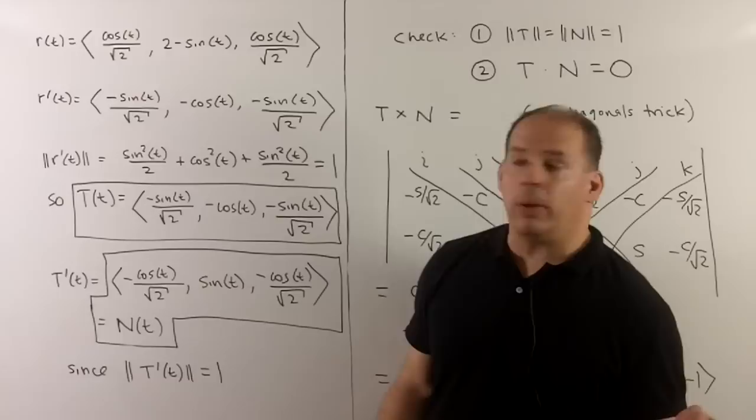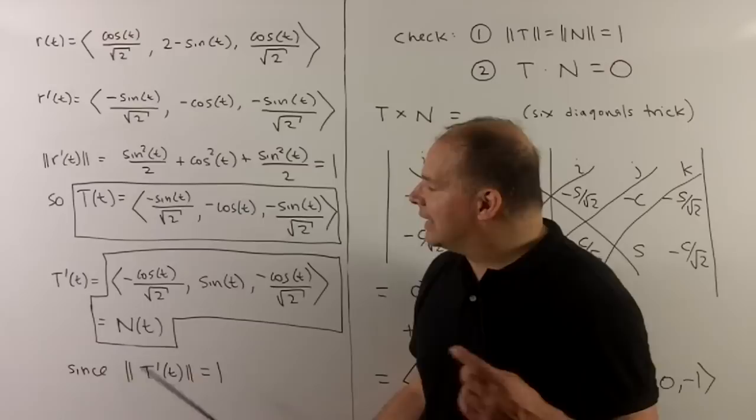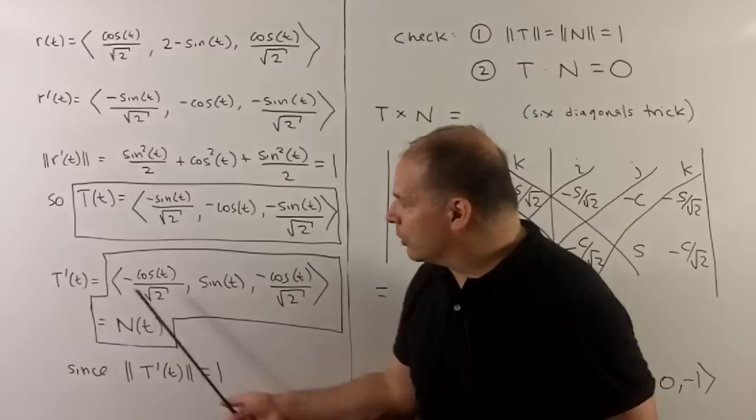To find the principal unit normal, we take the derivative of the unit tangent. So here sine goes to cosine, cosine goes to minus sine, sine goes to cosine. Again, we have the length of our derivative is equal to one, so our principal unit normal is just going to be equal to the derivative of T.